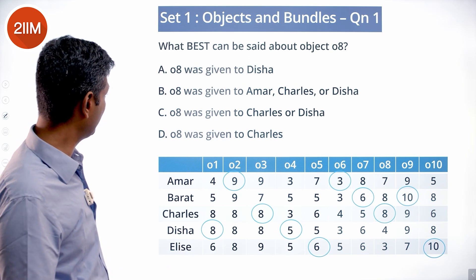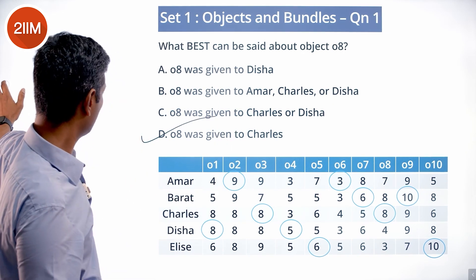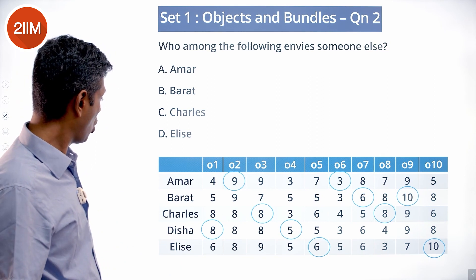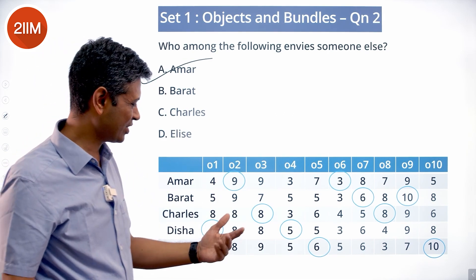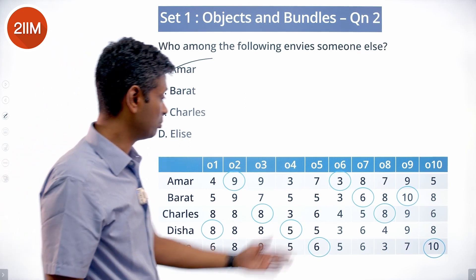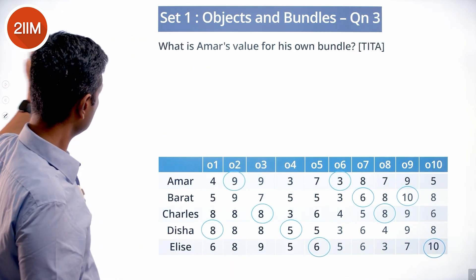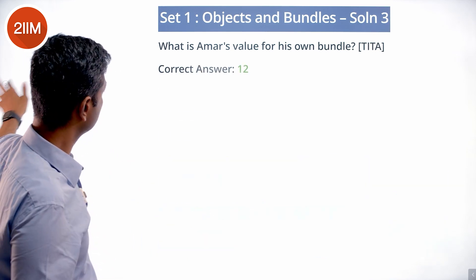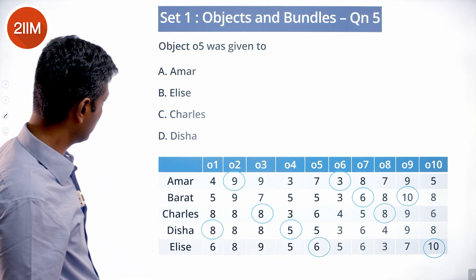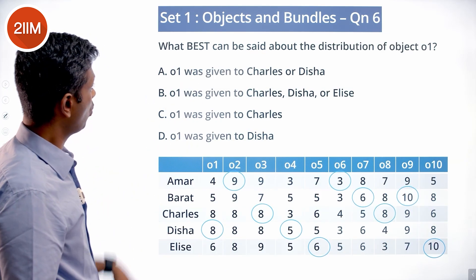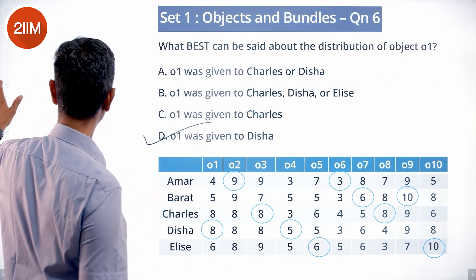What best can be said about object O8? Object O8 was given to Charles. O8 was given to Charles — that's the answer. Who among the following envies someone else? Only Amar or Disha could envy; Bharat, Charles, Elise won't envy. Disha is not in the choices, so the answer is Amar — he envies Bharat, valuing Bharat's bundle at 17. What is Amar's value of his own bundle? 9 plus 3 = 12. Object O4 was given to Disha. Object O5 was given to Elise. What best can be said about O1? O1 was given to Disha — only one possibility.